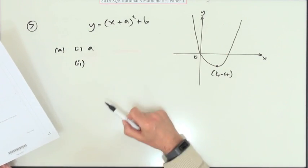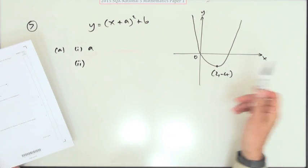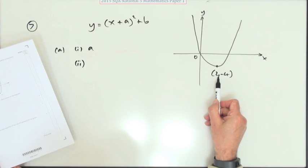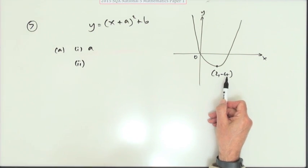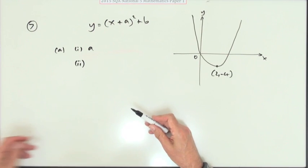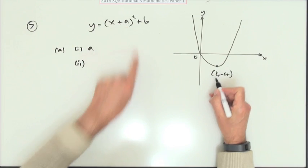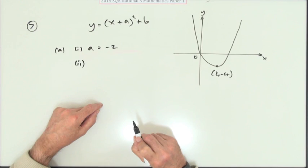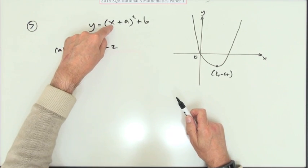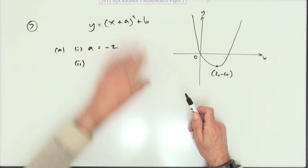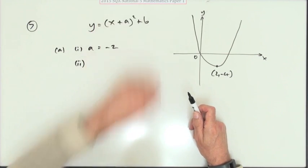There's this completed square form for a quadratic and it simply says if the turning point is at 2, negative 4, what's the values of a and b? a will be the negative of that, so a will be negative 2 because x has to be the opposite of it to make that part disappear and leave you with b.